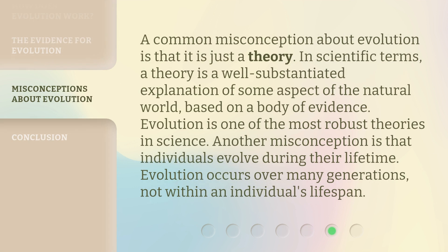A common misconception about evolution is that it is just a theory. In scientific terms, a theory is a well-substantiated explanation of some aspect of the natural world, based on a body of evidence. Evolution is one of the most robust theories in science. Another misconception is that individuals evolve during their lifetime. Evolution occurs over many generations, not within an individual's life span.